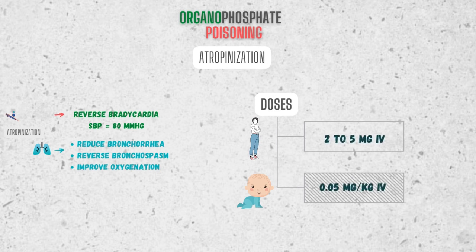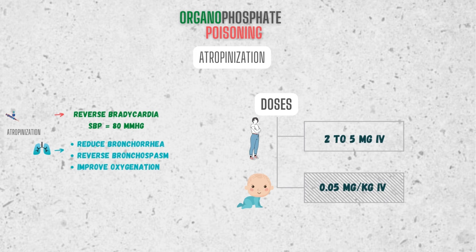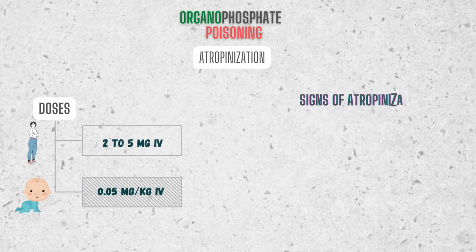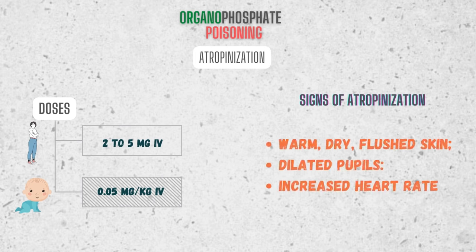The initial dose for adults is 2–5 mg IV, or 0.05 mg/kg IV for children until reaching the adult dose. If the patient does not respond to treatment, double the dose every 3–5 minutes until respiratory secretions have cleared and there is no bronchoconstriction. In severe poisoning, it may take hundreds of mg of atropine given in bolus or continuous infusion over several days. Signs of atropinization include warm, dry, flushed skin, dilated pupils, and an increased heart rate. Atropine should be used for at least 24 hours to reverse cholinergic signs while the organophosphate is metabolized.